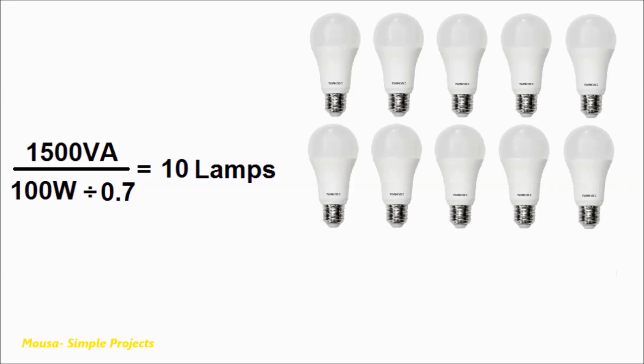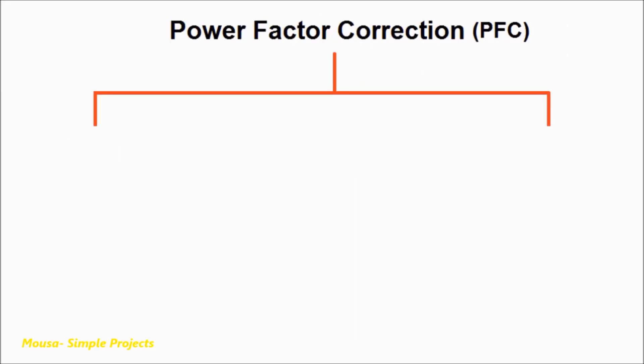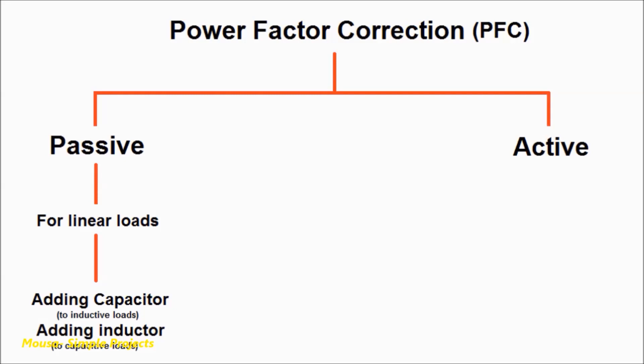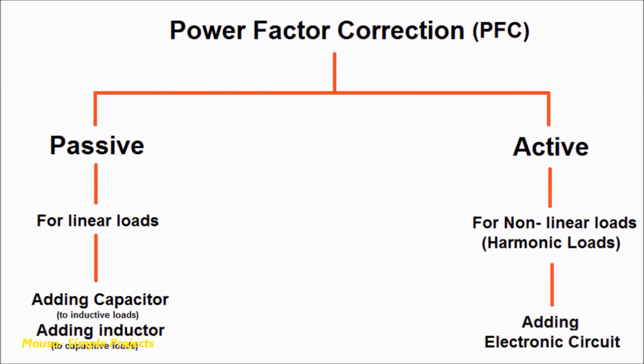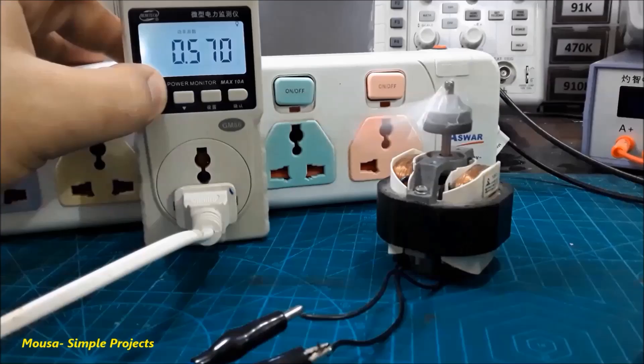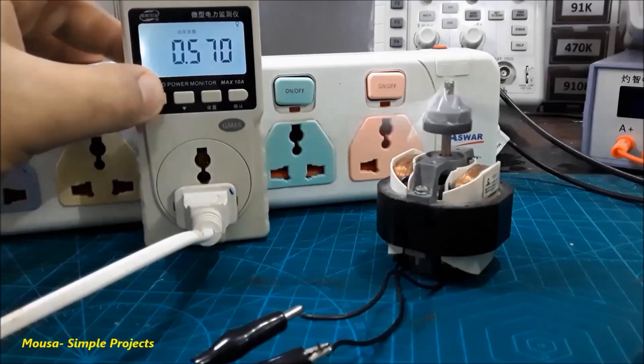This is why you have to improve the power factor of your loads if you want to use a solar or wind energy system at your home. There are two types of power factor correction: passive and active. Passive power factor correction is used for linear loads such as CFL or LED lamps.